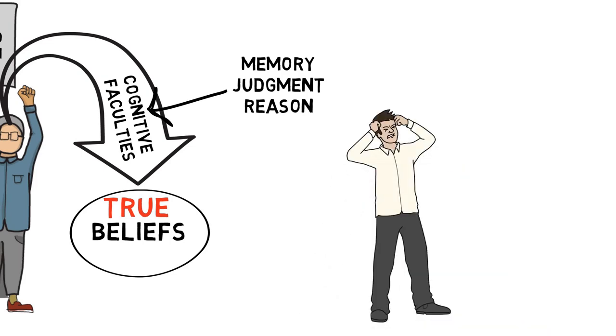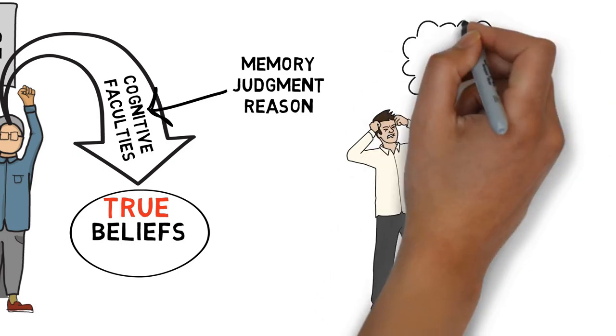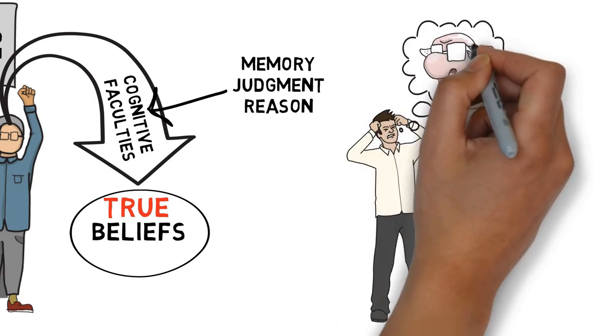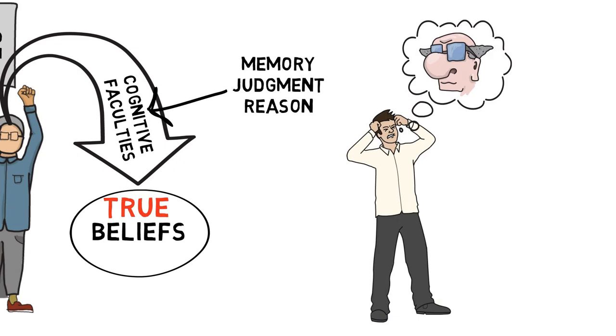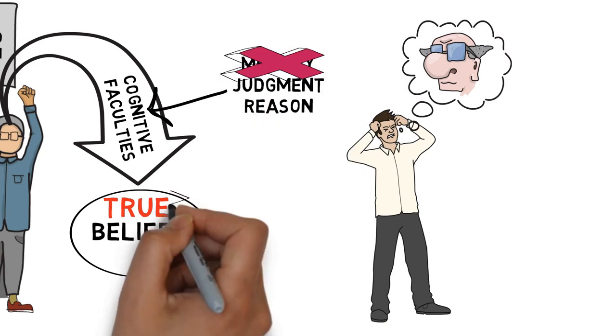However, when we adopt a belief that undermines this general reliability, we're no longer justified in believing that our cognitive faculties are generally reliable. If, for example, I come to believe that a mad scientist has put a chip in my brain that controls my memories, I'm no longer justified in trusting my memories.